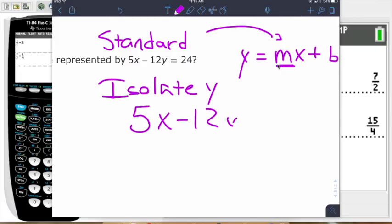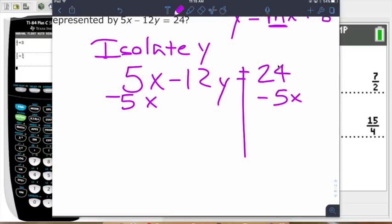To do that, we're going to subtract 5x from both sides. And 24 and 5x, those are not like terms, so we cannot combine those. We're just going to write it as negative 5x plus 24. We don't have a way to simplify that.